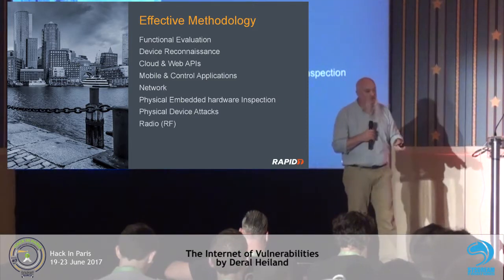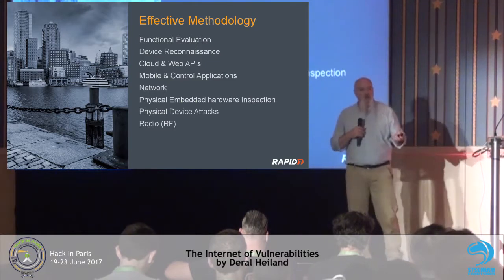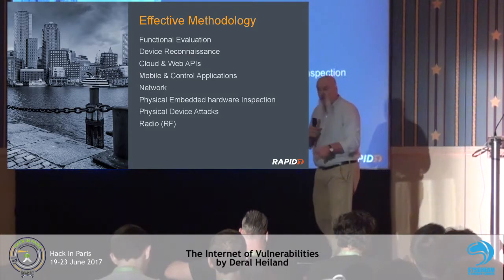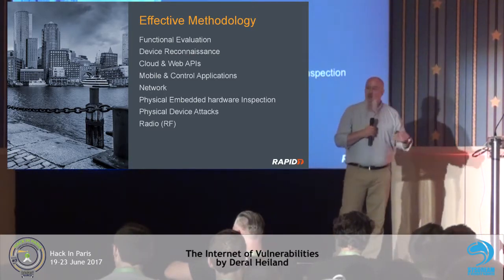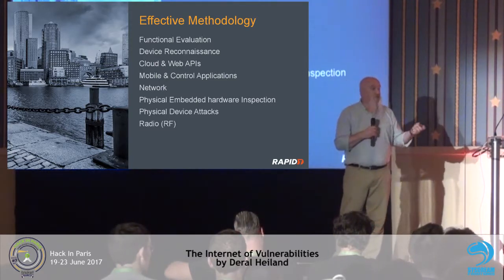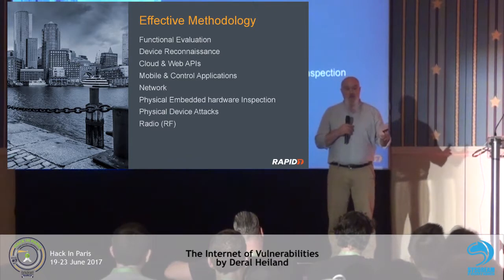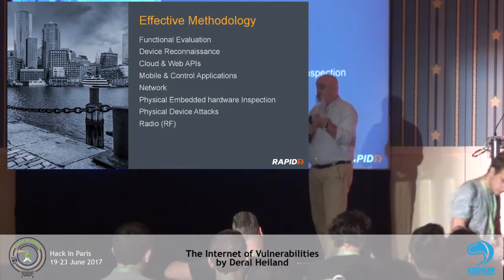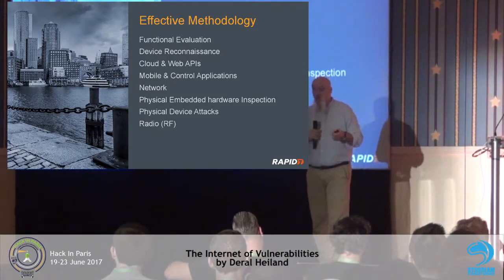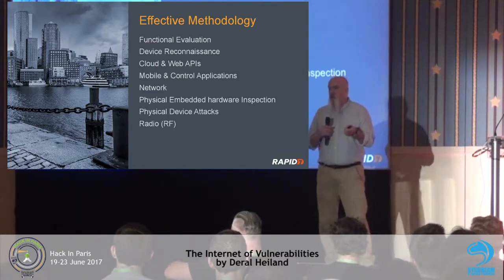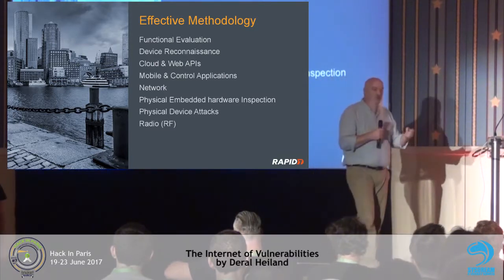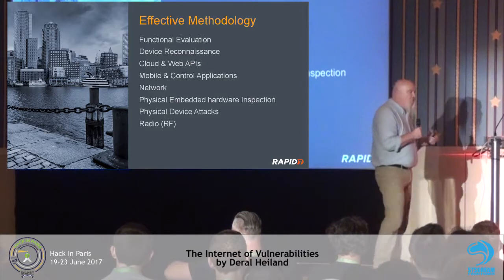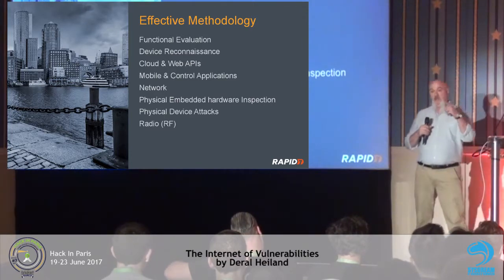The recon also looks at FCC information. You can pull the FCC ID off devices manufactured for the US, go to the FCC site, and get interesting information — complete breakdown images of the internal components, RF testing results, and on a few rare occasions, some schematics. Generally we farm all the information we can on that device, then focus on all the subcomponents of that ecosystem: cloud and web APIs, mobile applications, control applications, and the network.